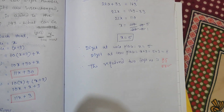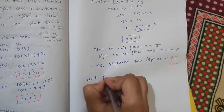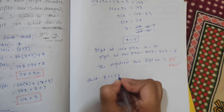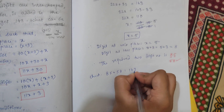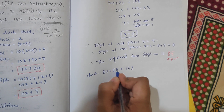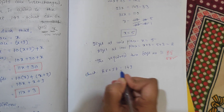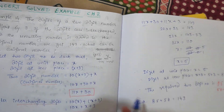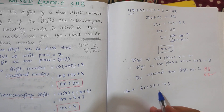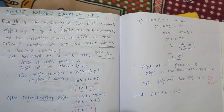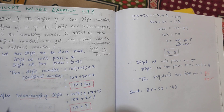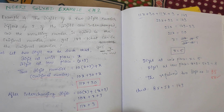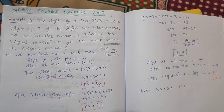Let us verify: 85 plus 58 equals 143, which matches the given condition. So 85 is the original number, 58 is the number after interchanging, and their sum is 143. Our answer is correct. This is all about example number 14 — a very important question from your examination point of view, so study all the details carefully.